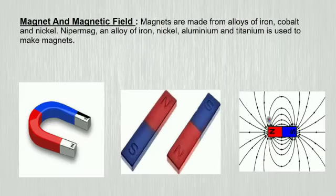What are magnets? A magnet is a material or object that produces a magnetic field. Magnets are made from alloy of iron, cobalt and nickel. Nipermag, an alloy of iron, nickel, aluminium and titanium is used to make magnets.